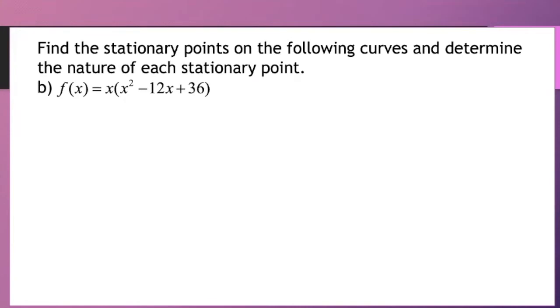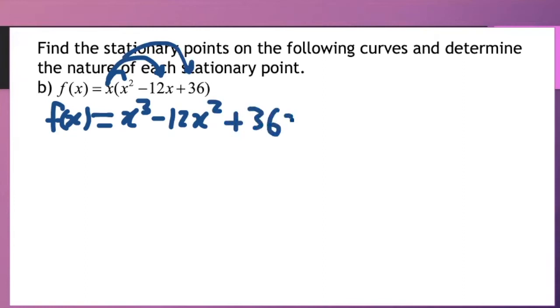So once again I'll be doing part B where I'll find the stationary points and determine the nature of each stationary point. Now since I have a bracket I will have to multiply x by the bracket that I have here. So multiplying x times x squared that gives me x cubed. Then multiplying x times minus 12x that gives me minus 12x squared and then multiplying x times 36 that gives me 36x and after having this I will be differentiating.